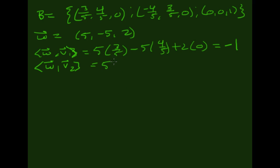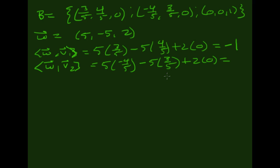If I take ⟨W, V2⟩, I go 5 times (−4/5) minus 5 times 3/5 plus 2 times 0. That's −4 minus 3, equal to negative 7.